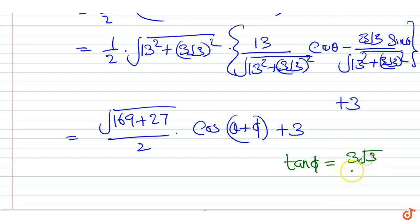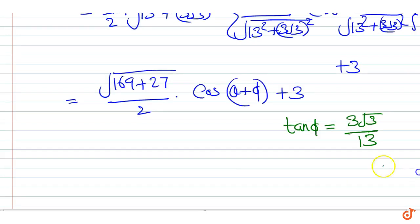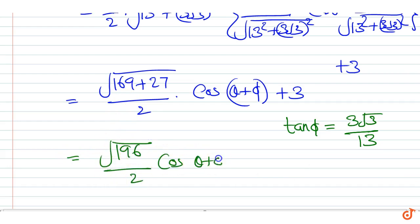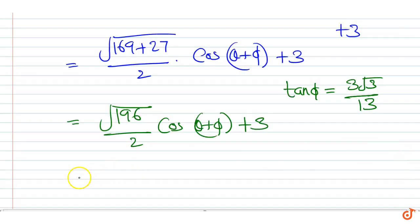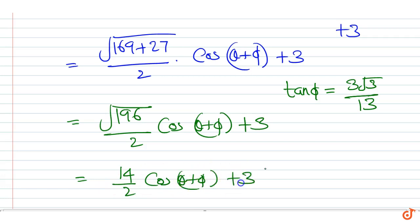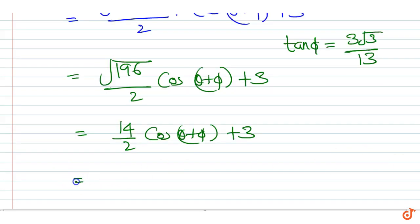This is equal to √196 · cos(θ + φ) + 3, which equals 14/2 · cos(θ + φ) + 3, equal to 7cos(θ + φ) + 3.